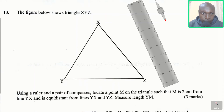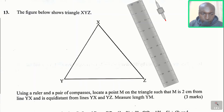Question number 13. The figure below shows triangle XYZ. Using a ruler and a pair of compasses, locate a point M on the triangle such that M is 2 cm from line YX and is equidistant from lines YX and YZ. Measure length YM.